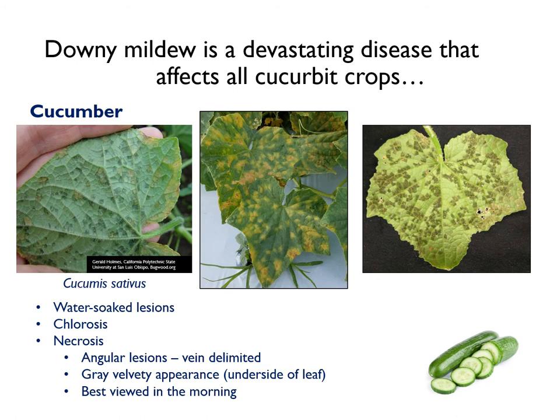On cucumber, downy mildew symptoms from the top of the leaf start as angular water-soaked lesions that turn yellow or chlorotic and become brown or necrotic over time. Severe infections can lead to rapid blighting and leaf death. From the underside of the leaf, these lesions will have a gray velvety appearance when P. cubensis is actively sporulating. These symptoms of water soaking and gray sporulation are best viewed in the early morning when relative humidity is typically at its highest for the day.